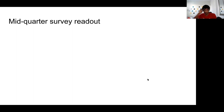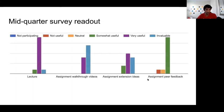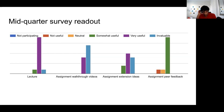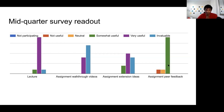I wanted to spend a minute on a recap of the mid-quarter survey. About 12 people replied, and I appreciate that. The most telling part: I asked about each component of the class. Lecture — people find it valuable overall. The most valuable parts, from the student perspective, are the walkthrough videos and extension ideas, which makes sense. The part that could use improvement is the assignment peer feedback — most people rated it as only somewhat useful, and a couple rated it as not useful.